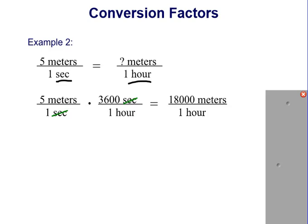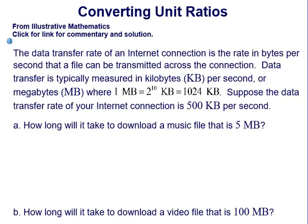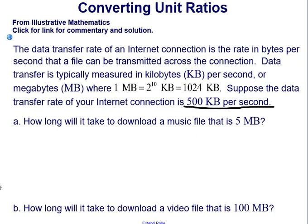Conversion factors are used all the time in real-life applications. Here's an example: the data transfer rate of an internet connection is the rate in bytes per second that a file can be transmitted. If your internet connection is 500 kilobytes per second, part A asks how long it will take to download a music file that is 5 megabytes.